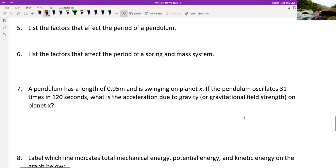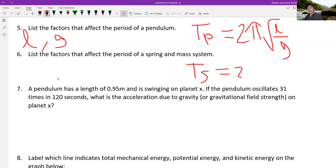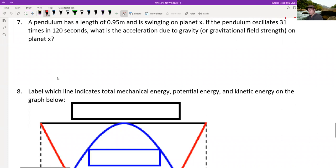Let's skip down to number five here. What things affect the period of a pendulum? Well, what is the period of a pendulum? 2π times the square root of L divided by g. So length and gravity affect it. What's the period of a spring? 2π times the square root of M over K. So mass and spring constant affect it.